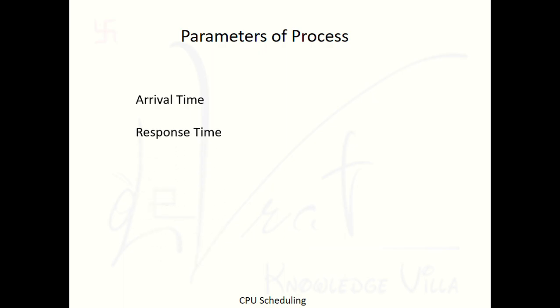The next parameter is Response Time — after a process arrives in the ready state, the time when it first gets the CPU is called the response time. Like when you're chatting and type 'hi' several times, and someone finally replies 'hello, how are you' — that reply is the response. When a process in the ready queue finally gets the CPU, that time is its response time.